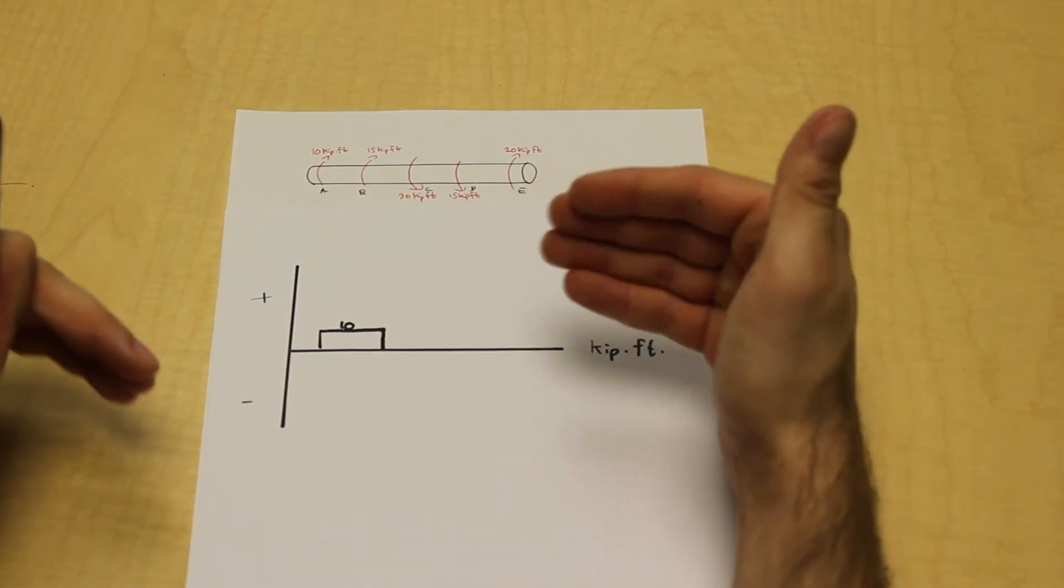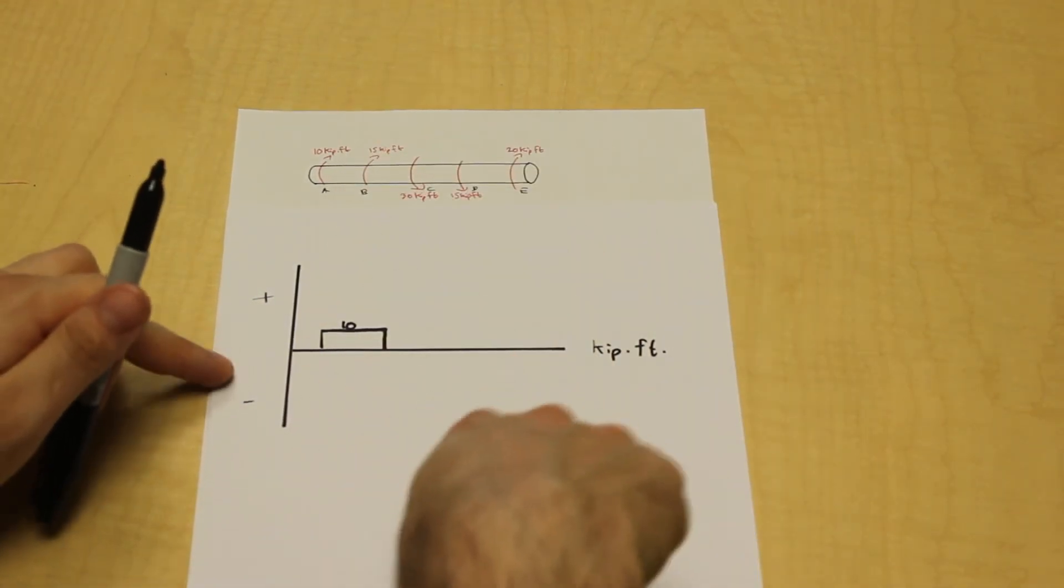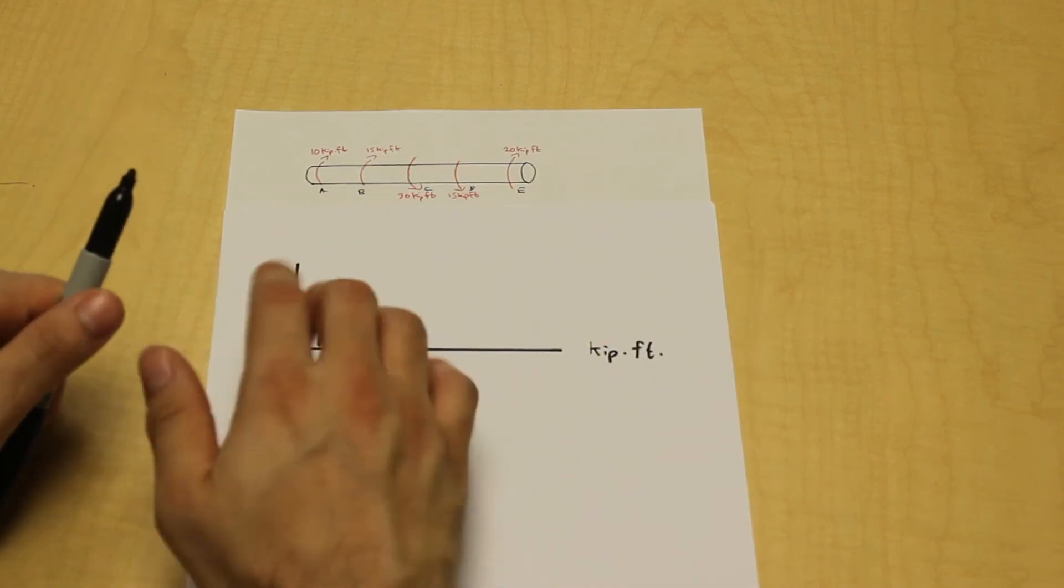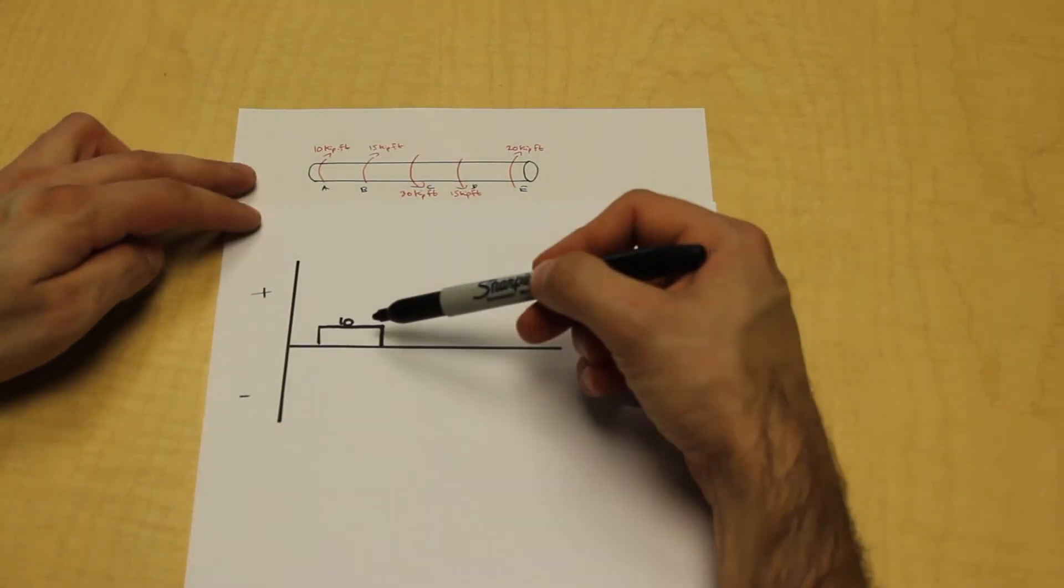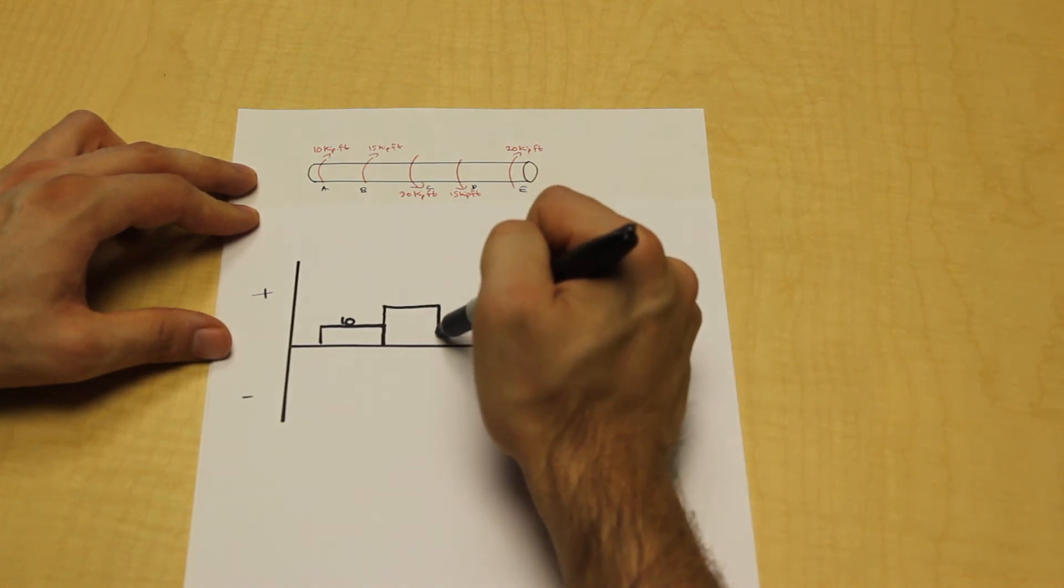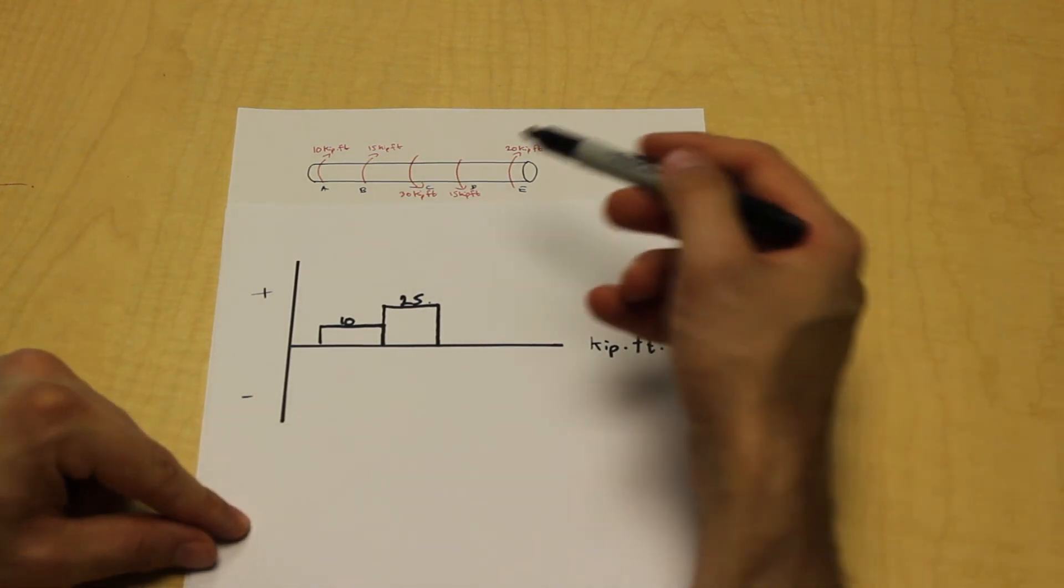In the previous equilibrium method of solving, we simply took the numbers that we solved for the torques and we put them in the diagram. With this shortcut method of solving, we're not going to do that. We're going to add 15 to 10, and we're going to get 25, and that is going to be what we put on the torque diagram, and that's going to represent the internal resisting torque.